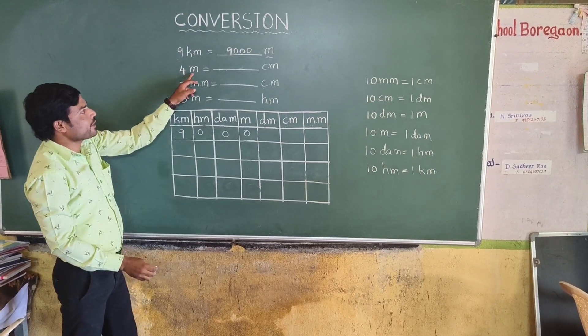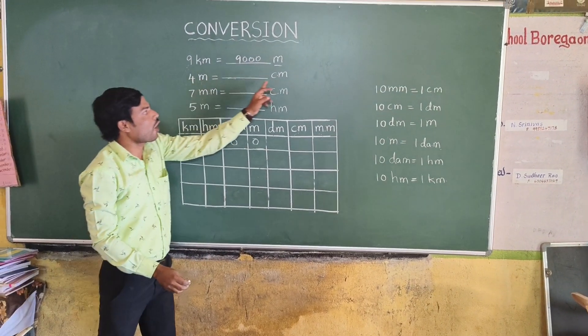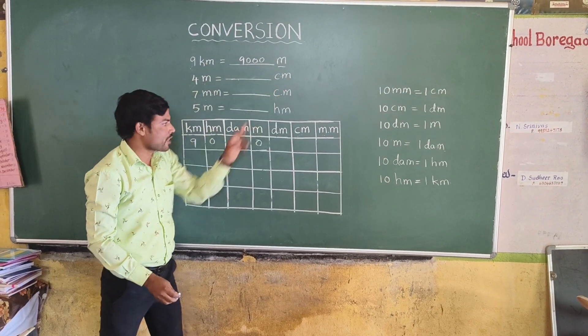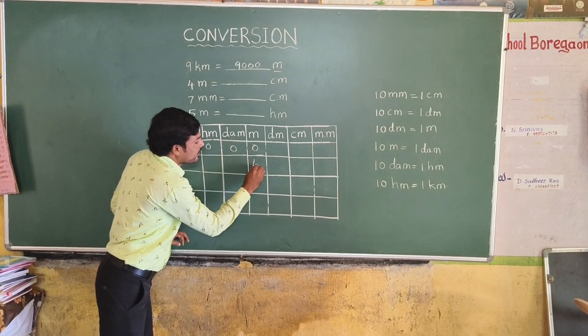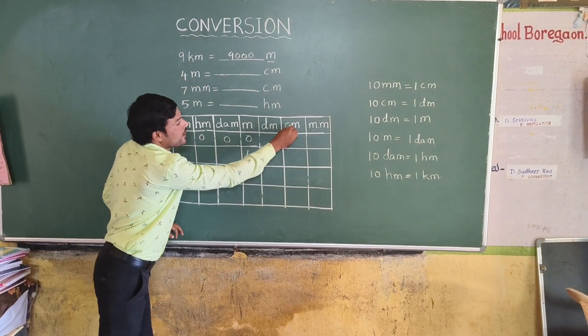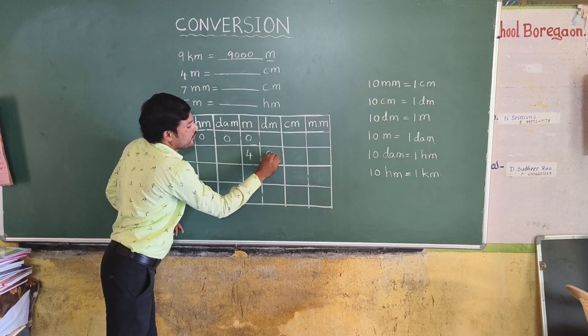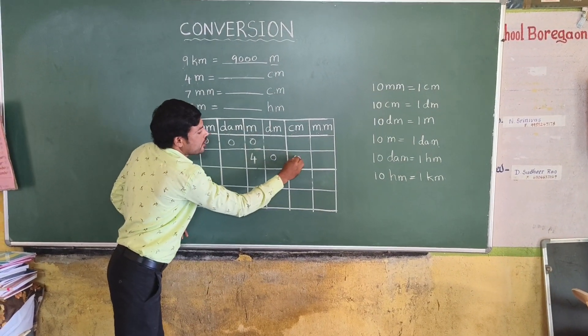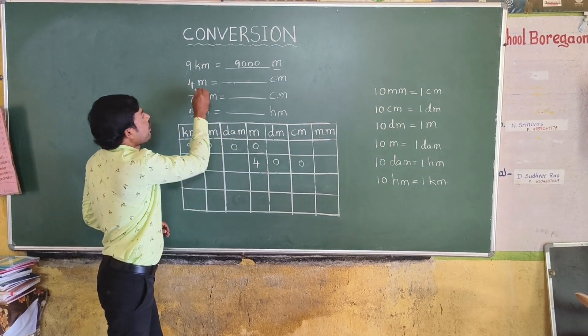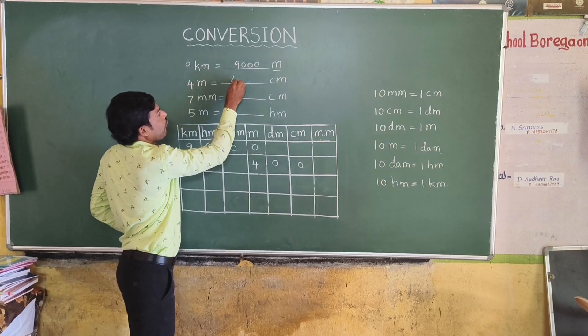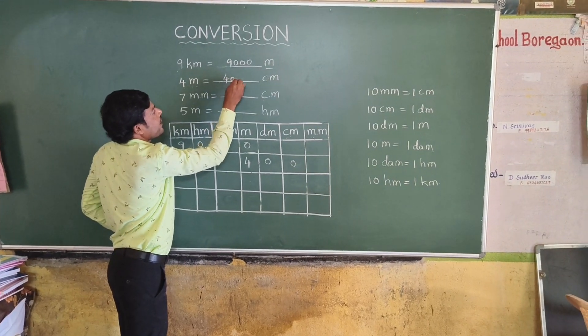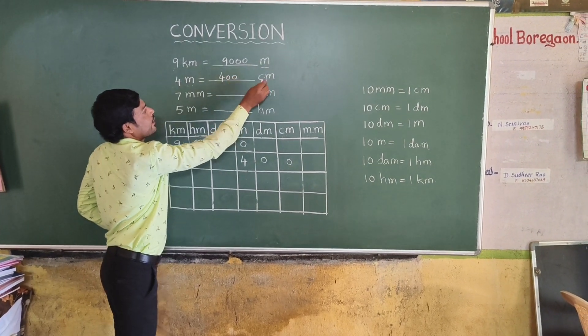4 meters is equal to how many centimeters? 4 meters... centimeters... 4 meters is equal to 400 centimeters.